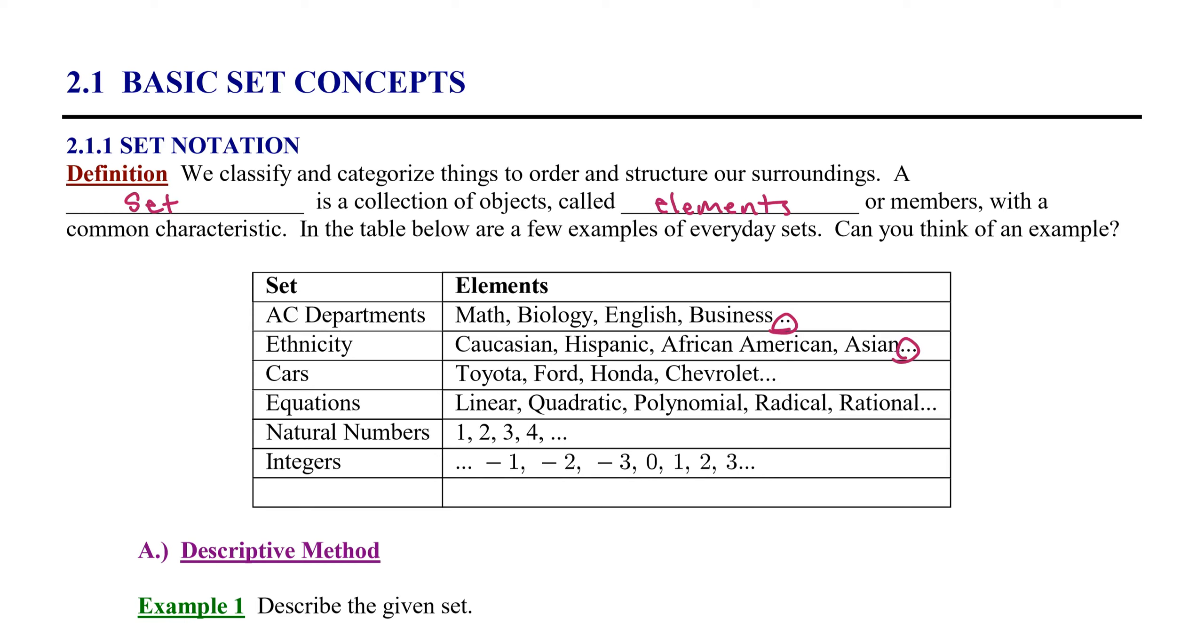We also apply set theory to organizing numbers. For example, natural numbers are the counting numbers. One, two, three, four. Notice the ellipsis in this case indicates that that is an infinite set. It goes on forever and ever.